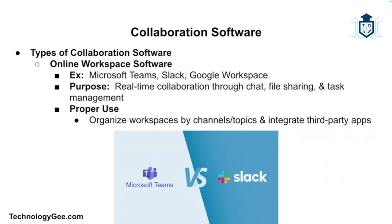Online workspace software, like Microsoft Teams, Slack, or Google Workspace, provides a virtual hub where teams can collaborate on projects in real time. It helps teams stay organized by offering chat features, file sharing, task management, and integration with other productivity tools, allowing teams to work on projects together even when not in the same physical location.